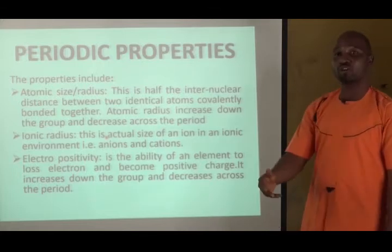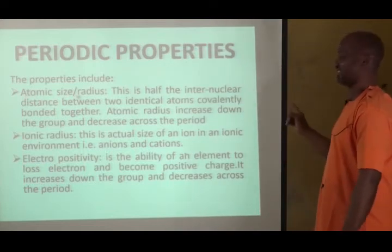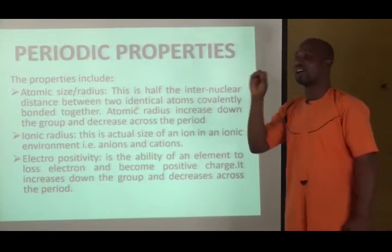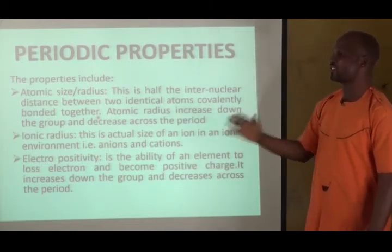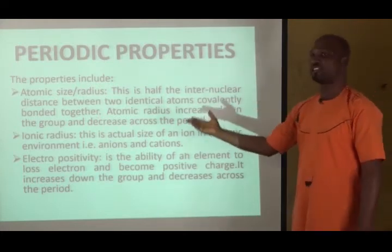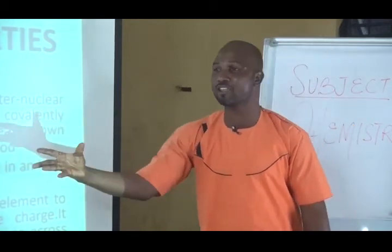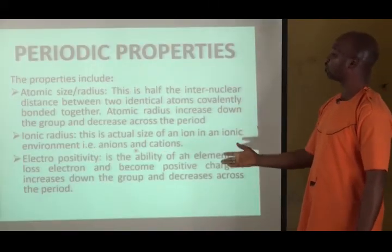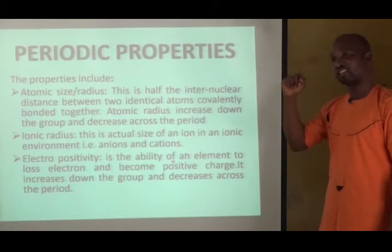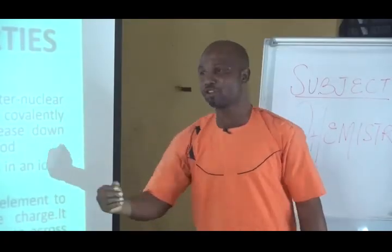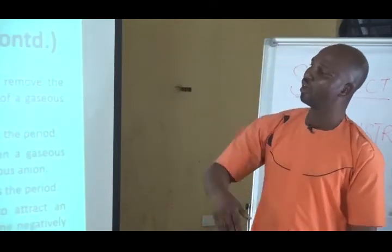Looking at the periodic properties of elements and their variation on the periodic table: one of them is atomic size, also called atomic radius, which is half the internuclear distance between two identical atoms that are covalently bonded. Atomic radius increases down the group and decreases across the period. The second one is ionic radius, the actual size of an ion in an ionic environment — it can be anions or cations. The next one is electropositivity — the ability of an element to lose an electron and become positively charged, the same as metallic character. Electropositivity increases down the group and decreases across the period.